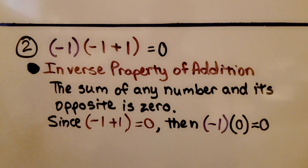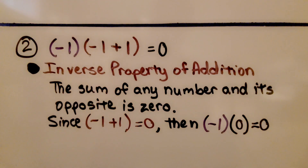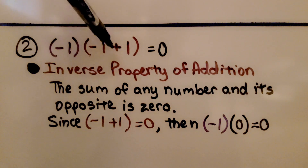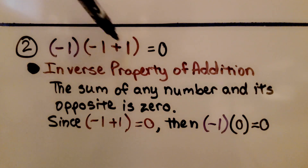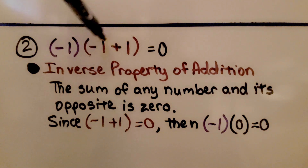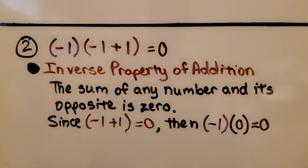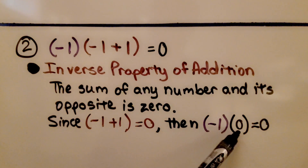For our second step, we have negative 1 times the quantity negative 1 plus 1 is equal to 0. This is the inverse property of addition — it states the sum of any number and its opposite is 0. So we have negative 1 plus 1; they make a zero pair. This is a giant 0 here, so we could replace that expression with a 0. Since negative 1 plus 1 is equal to 0, then we have negative 1 times 0 is equal to 0. That's true.